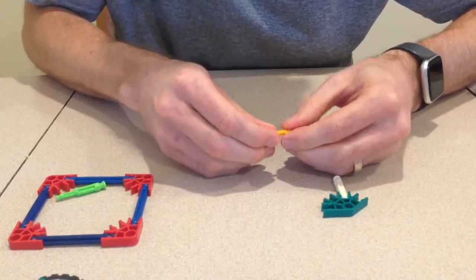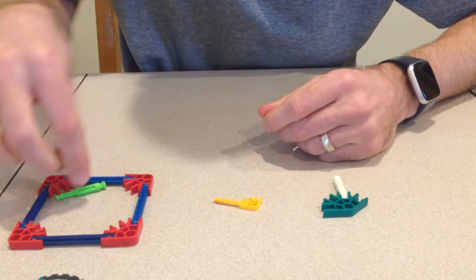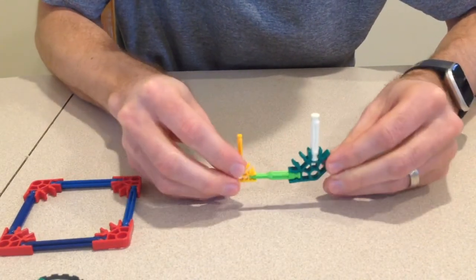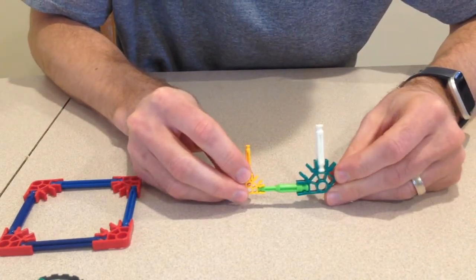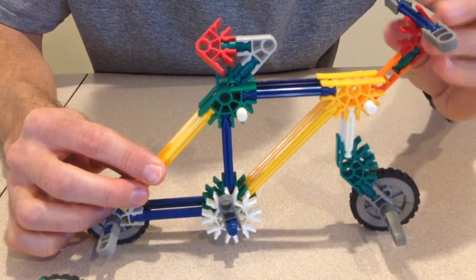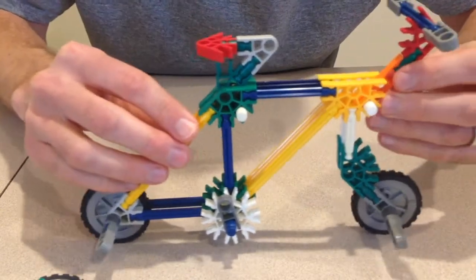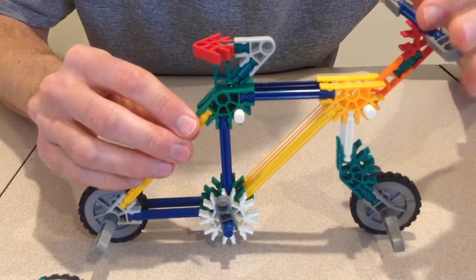They come in regular sizes and micro sizes. You do need adapters to connect the regular pieces and the micro pieces together. Today, I'm going to show you how to use regular K'nex pieces to build a bicycle. The bike has two rolling wheels, a seat, and handlebars.